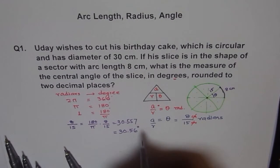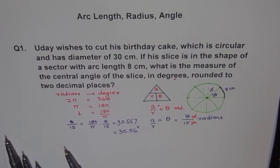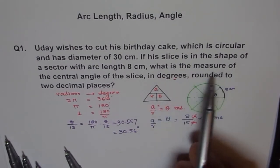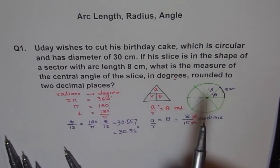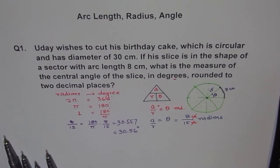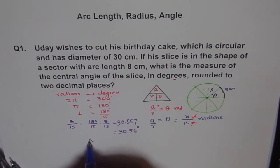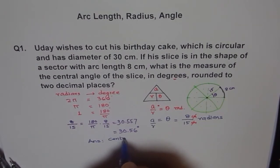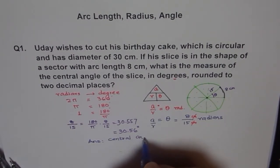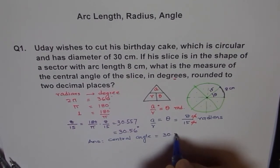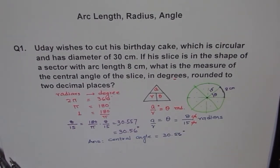And what is this? This is degrees. Don't forget the unit here. So, what is the measure of central angle of the slice angle? Central angle will measure 30.56 degree. Don't forget to write your answer clearly. So, we write down answer as, Central angle equals to 30.56 degrees. Do you understand?